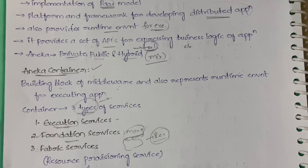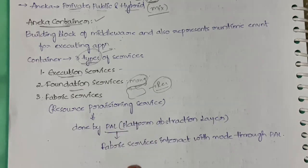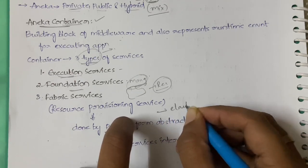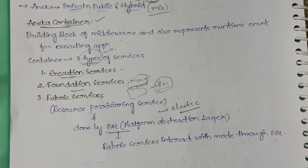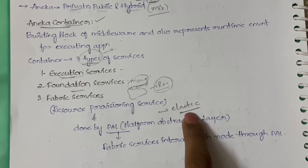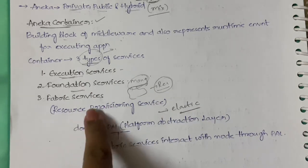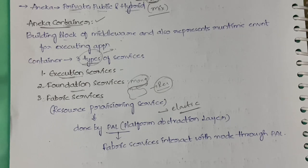One of the most important services in Fabric Services is the Resource Provisioning Service, which is handled by the Platform Abstraction Layer (PAL). This resource provisioning service makes Aneka elastic, so it can grow and shrink dynamically according to the requirement and traffic. The Fabric Services interact with the node through this PAL.